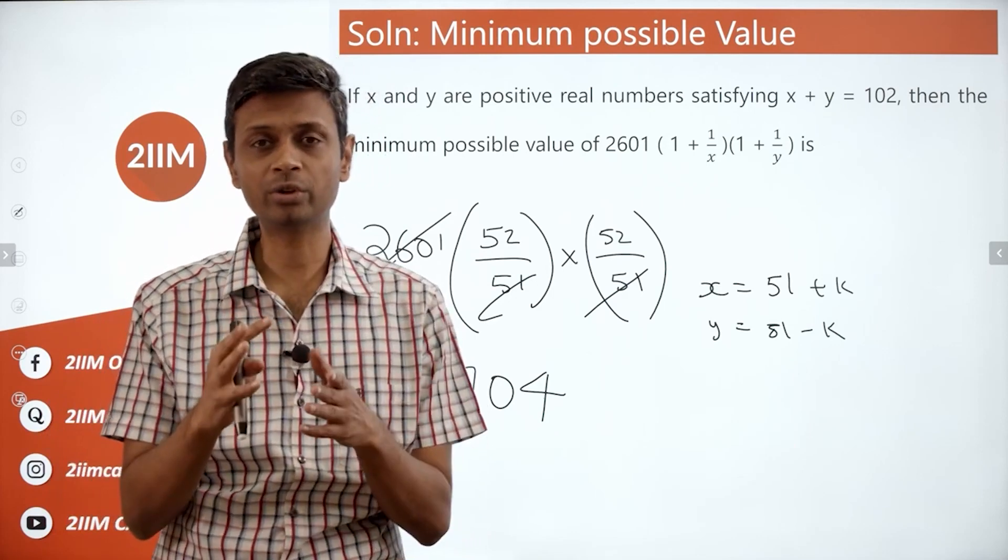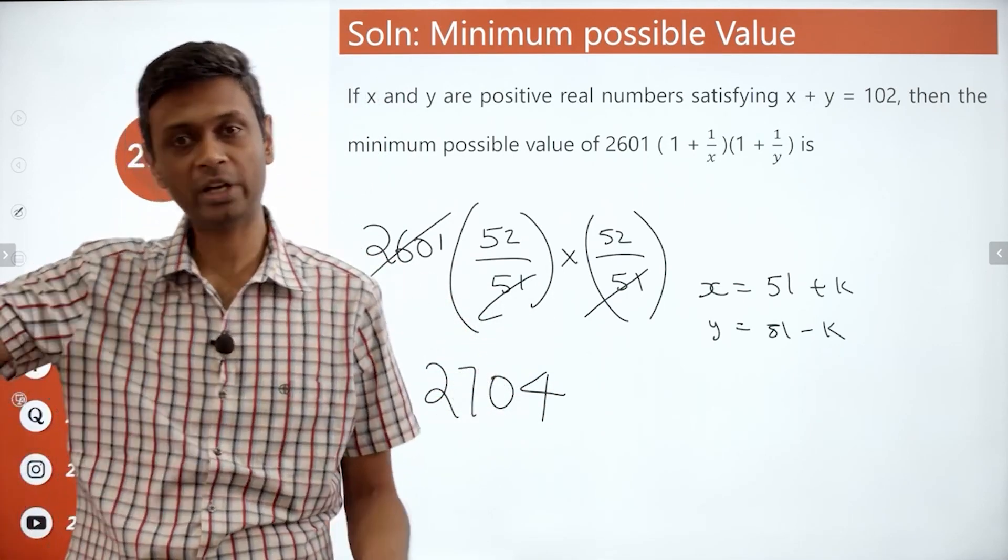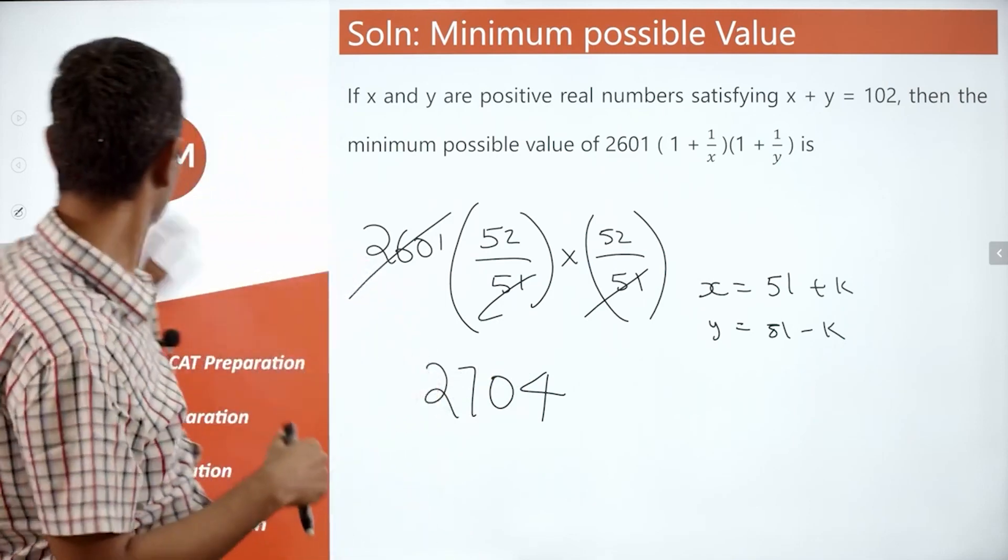That method also takes you to the answer reasonably quickly, but this is far better. Plonk in one extreme, plonk in the other extreme, you'll be able to find the answer.